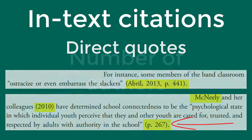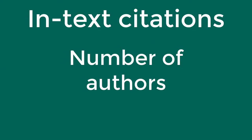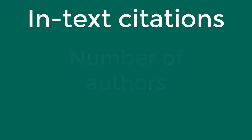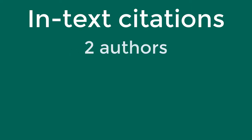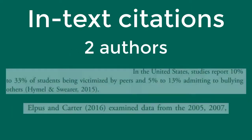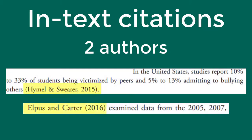There are also a number of rules for how to list authors depending on the number of authors. If the material you are citing has two authors, you need to include both authors' last names. Use an ampersand when the citation is at the end of the sentence, and use the word 'and' when the authors' names are written in the sentence.